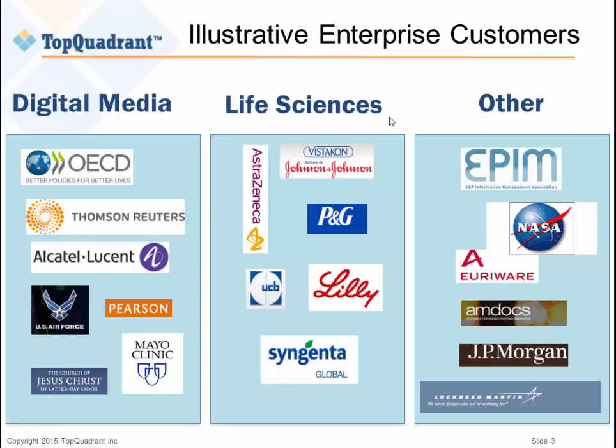Some of the customers who've used our various products — note in particular how Mayo Clinic is not under Life Sciences but under Digital Media. That's because they use TopGrade EVN as part of a publishing platform. They developed mayoclinic.edu, mayoclinic.com, and mayoclinic.org — websites developed independently — and when they wanted to combine and integrate them along with their metadata, they used TopGrade EVN to assign keywords to health articles so their customers can more easily find them.